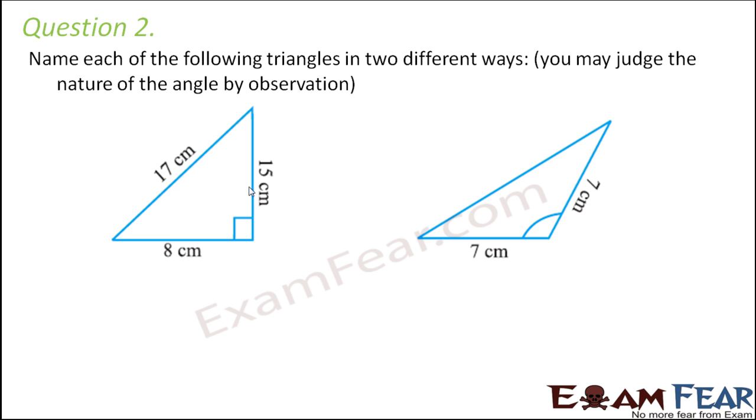So just by observation, we have to tell which triangle is of which type. So the first triangle we see all the measurement of the three sides are different. So that means this is a scalene triangle. But at the same time, regarding the angles, we see that there is one angle which is 90 degrees. So that means this is a right angled scalene triangle.